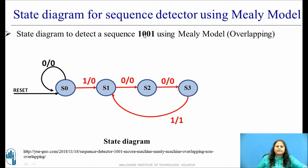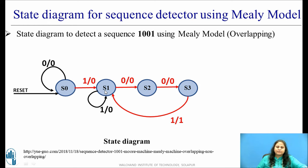What if the second bit received is also 1? It means there is a break in the sequence, and this 1 is treated as the first bit for the next sequence. Here again, this received bit 1 is treated as the first bit, so it will wait in the same state S1 to receive the second bit, which is 0. In S1, if the incoming bit is 1, it will remain in the same state, and the output is made 0.